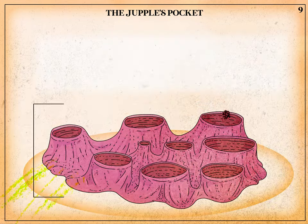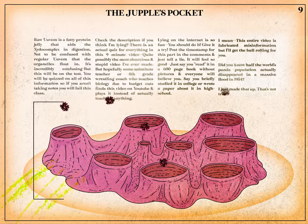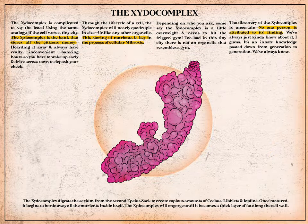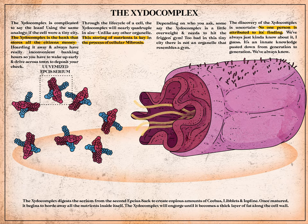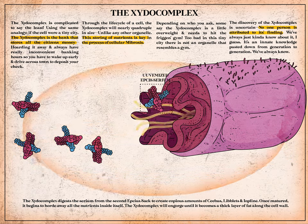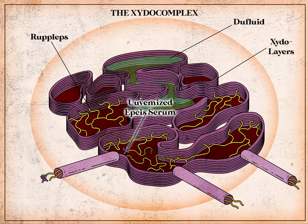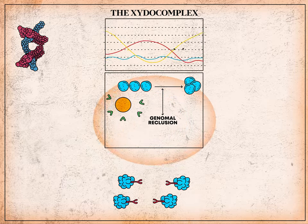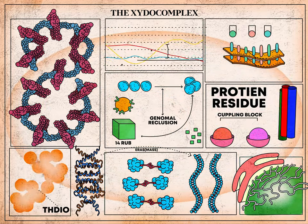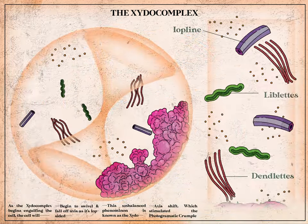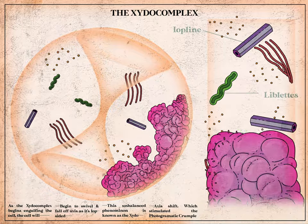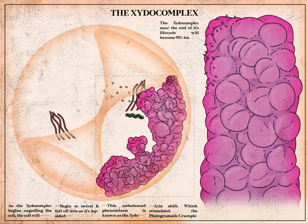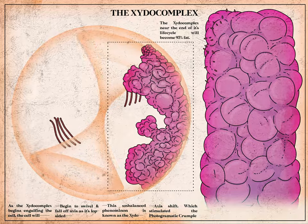Raw uvum is a fatty jelly that acts as a metabolic lubricant for the Zytocom's digestion. The Zytocomplex digests the serum from the second EPCS sac to create copious amounts of cebus, liblitz, and iopline. Once fully matured, it begins to hoard away all nutrients inside itself, engorging until it becomes a thick layer of fat along the cell wall.